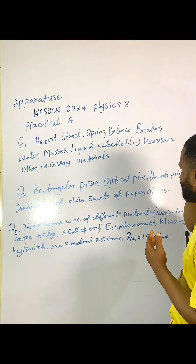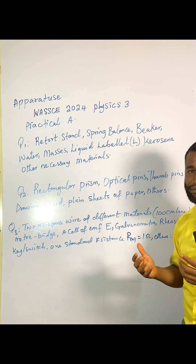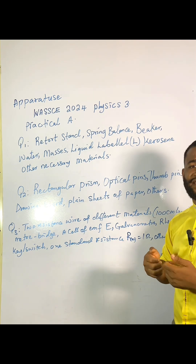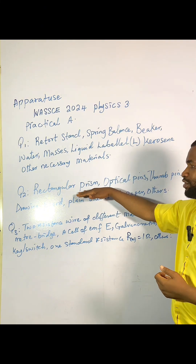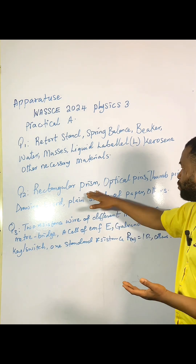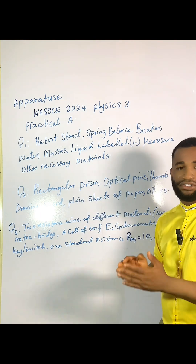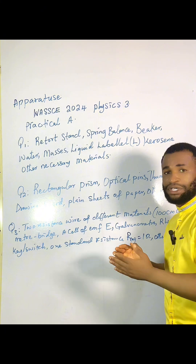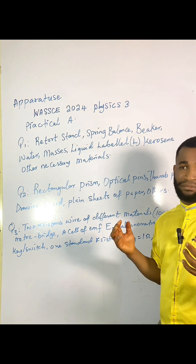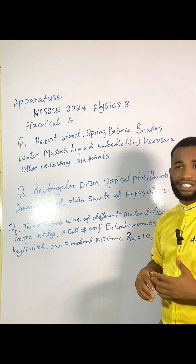For experiment two, the rectangular prism and optical pins are listed. For the thumb pins, you may use paper tape instead, since all you are using the thumb pin for is to fasten the paper on the board. Even if your school doesn't have a board, you can use a cardboard to hold the paper so you can easily place your optical pins. This experiment may be to find the refractive index of the rectangular block. Remember to stick your paper because they'll be looking for it before they mark you. Your SI unit is very important in your slope for each experiment.